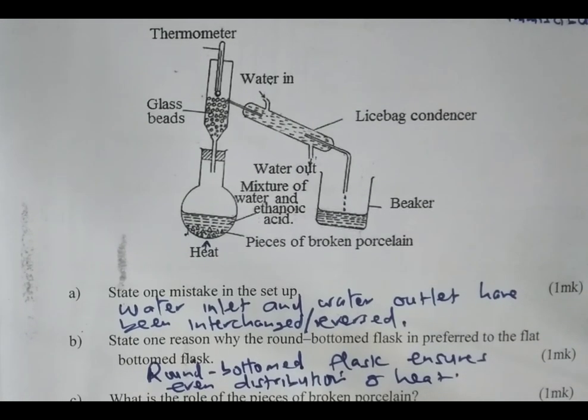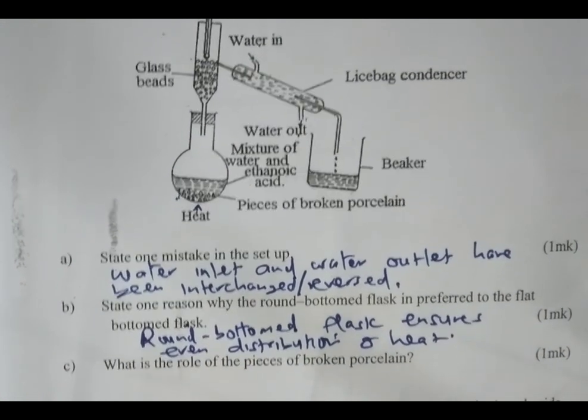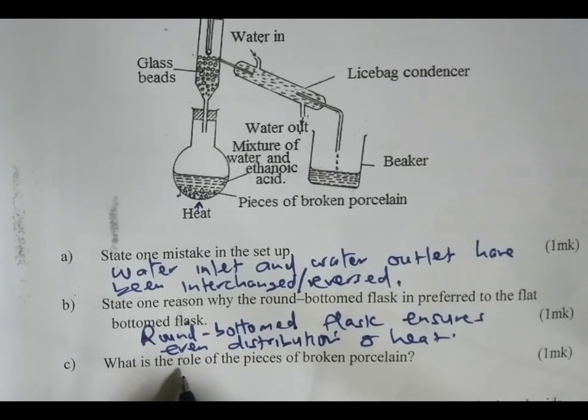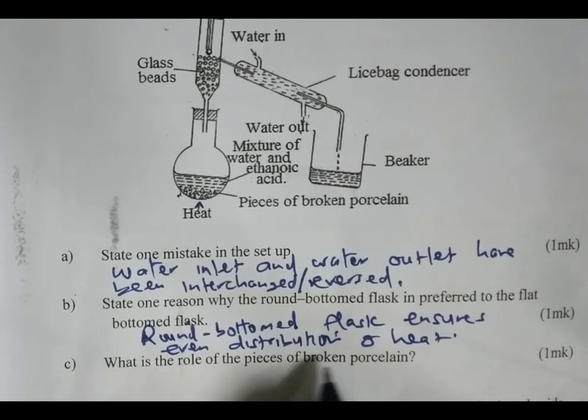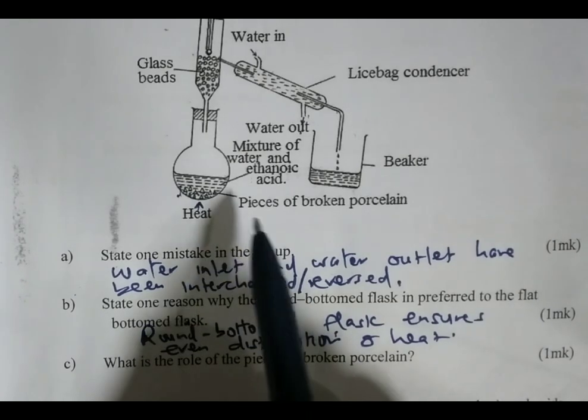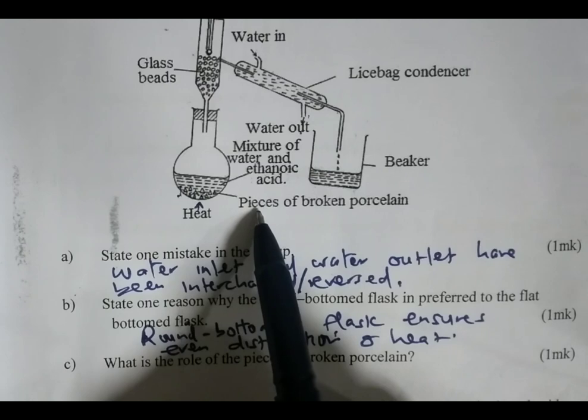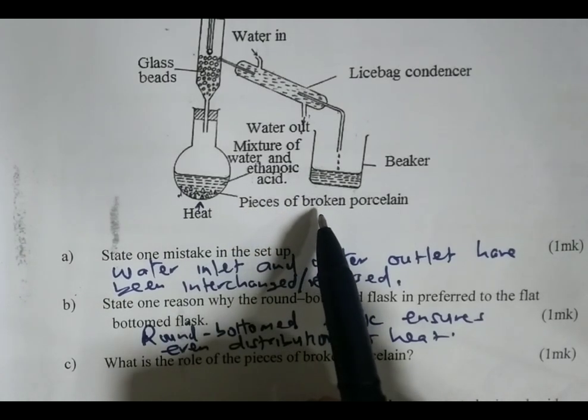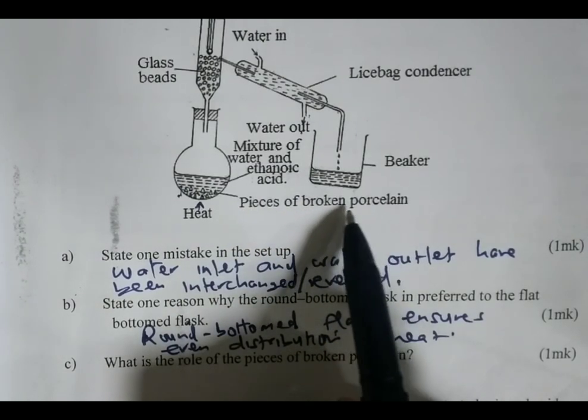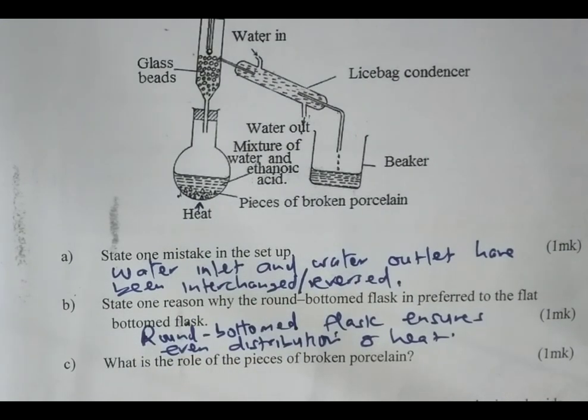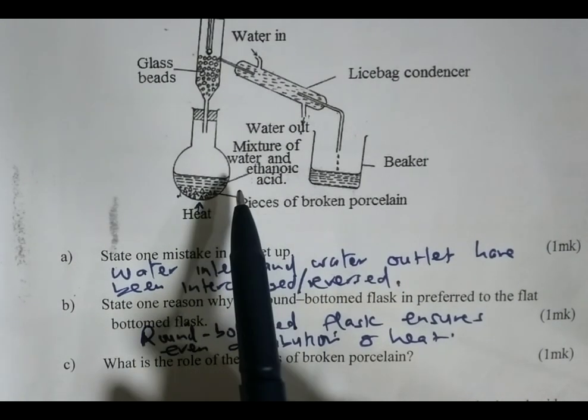Then we move down to part C. What is the role of the pieces of broken porcelain? And you can see in the mixture, we have some pieces of broken porcelain. If we don't use porcelain, then we use sand. What is the role of broken porcelain?